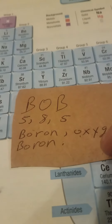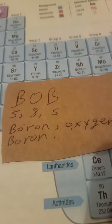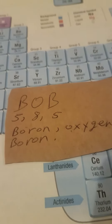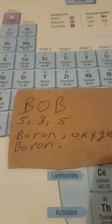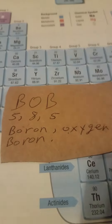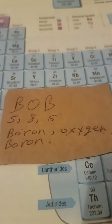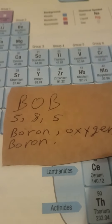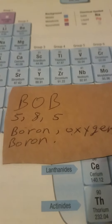Now, boron is atomic number 5, oxygen is 8, and boron is 5. So when I see my friend Bob or talk to my friend Bob, I know that he's a 5-8-5. This is a way we can remember the periodic table.